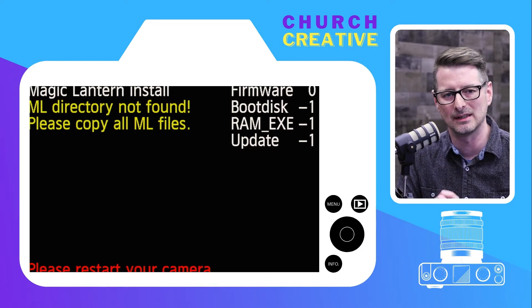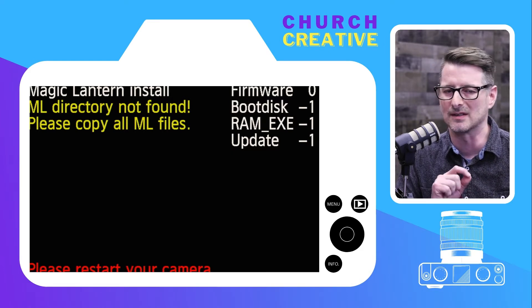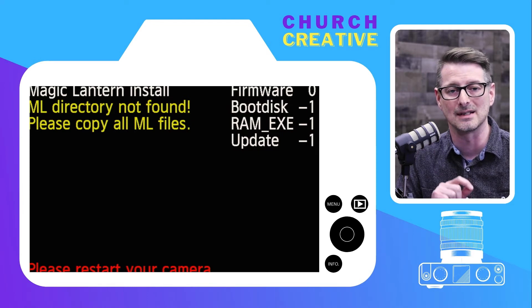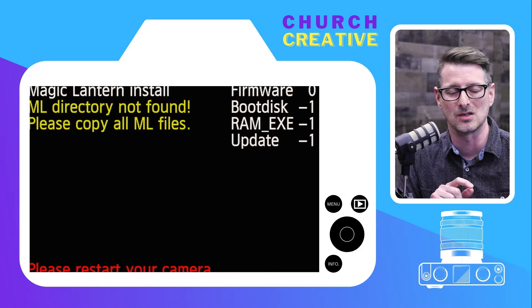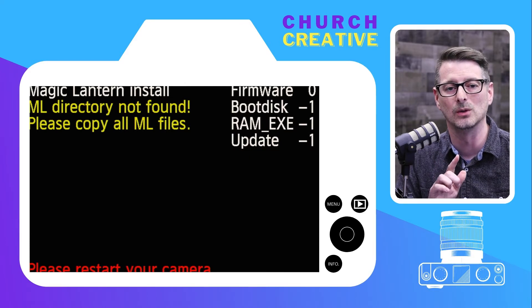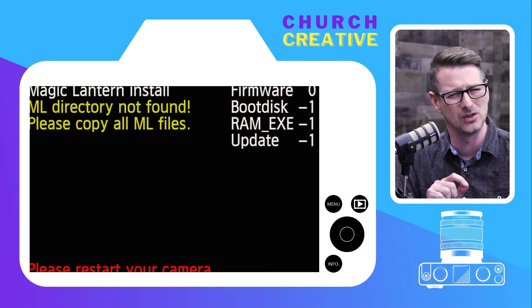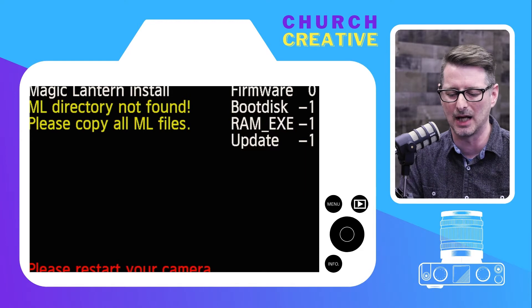If you're using the latest version of Mac OS, which is Big Sur, when you copy files over it's copying over a file that is not going to work for Magic Lantern install. It's something that your Mac OS system does and it's what's causing the problem. So what you want to do is format the disk before you put the files on. You want to format it to FAT32, and I'll show you how that works.